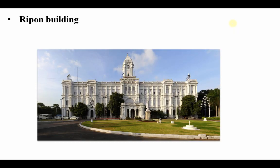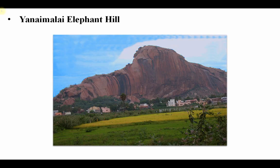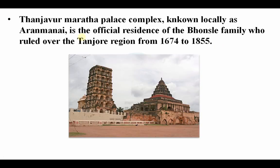Ripon Building — Ripon was a Viceroy in the British government, and this building is in Tamil Nadu. Yanamalai Elephant Hill is a structure in the shape of an elephant and is also in Tamil Nadu.